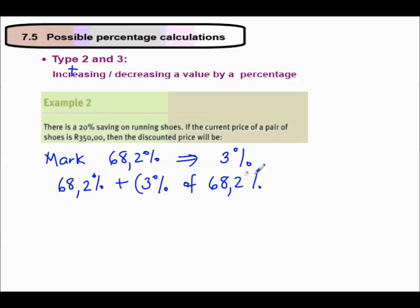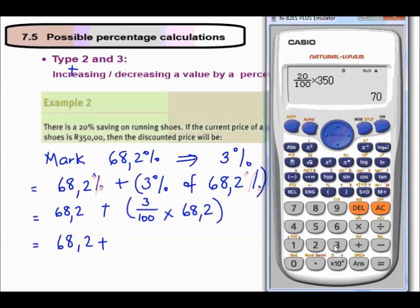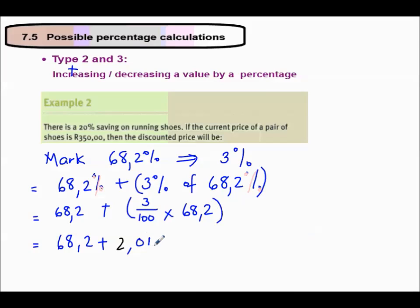Increase means add. So I'm going to have 68.2% plus 3% of the original mark, which was 68.2%. That is a unit and this is a unit. So we're going to say 68.2, the mark, plus 3% is 3 out of 100 times 68.2.